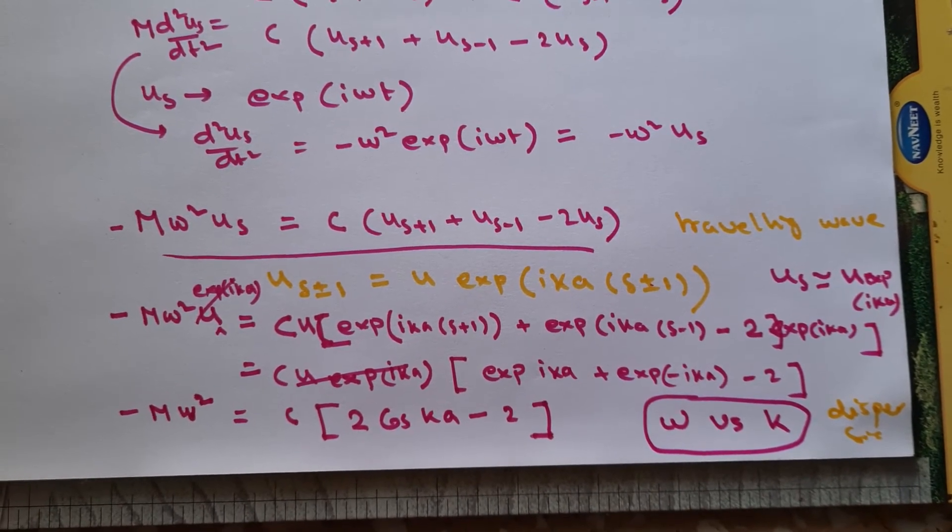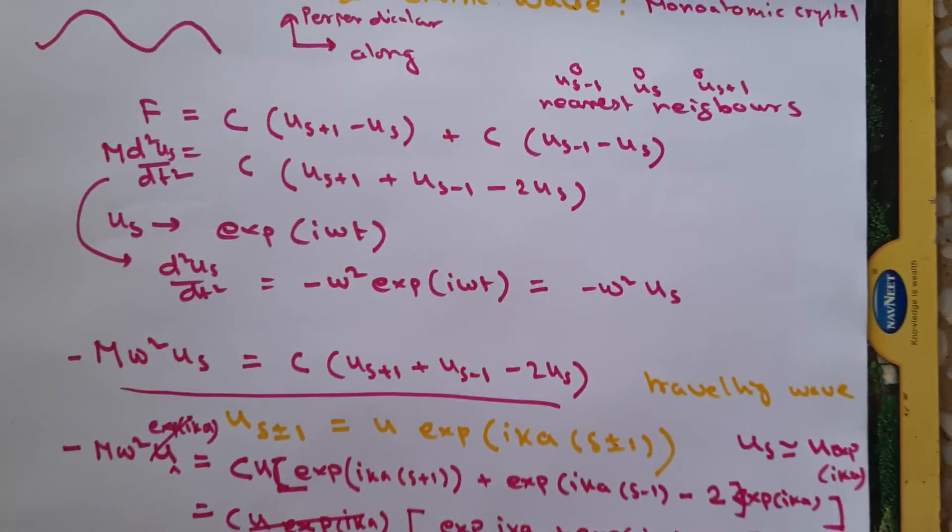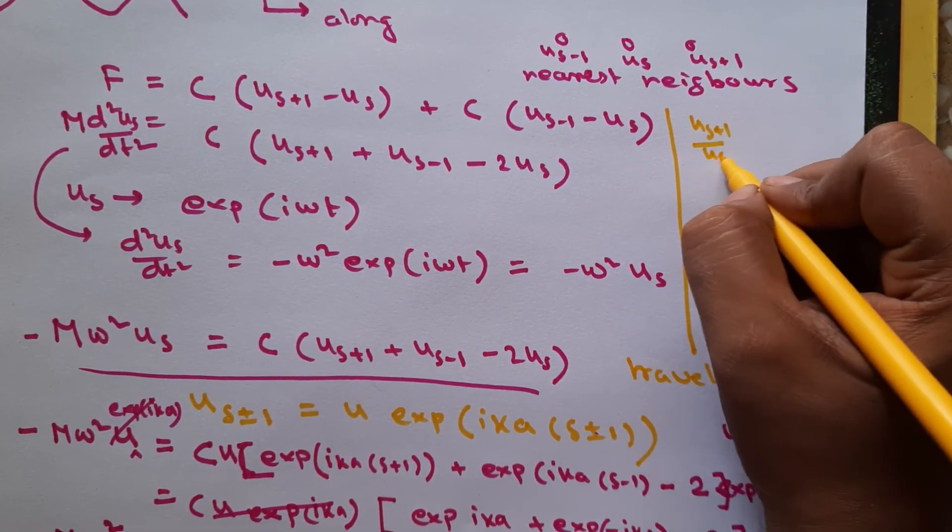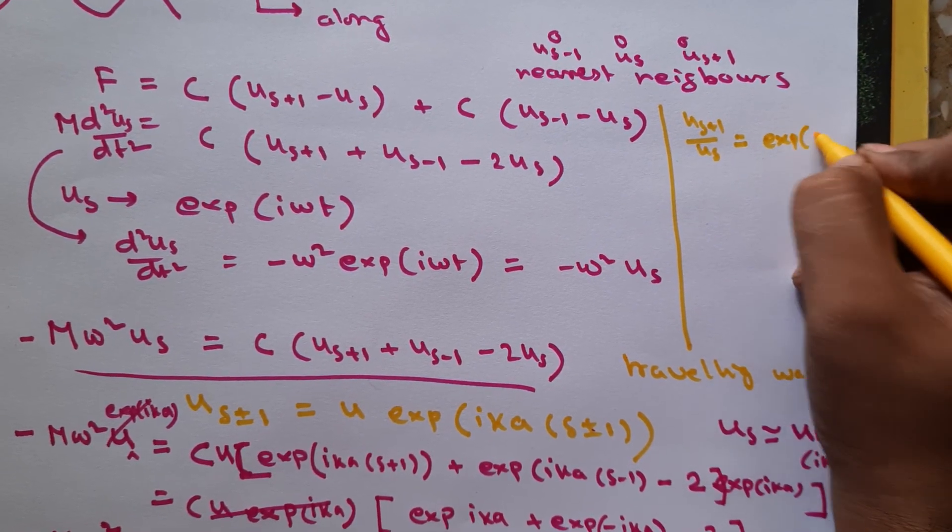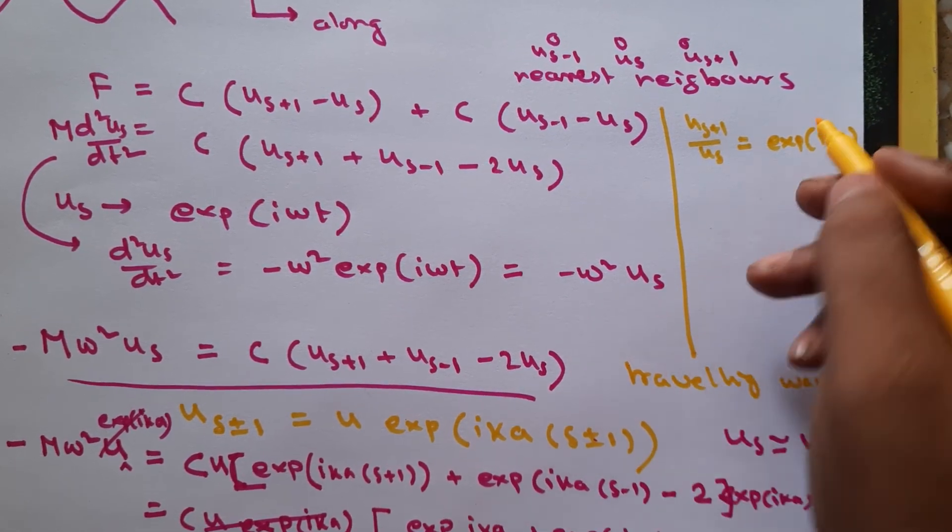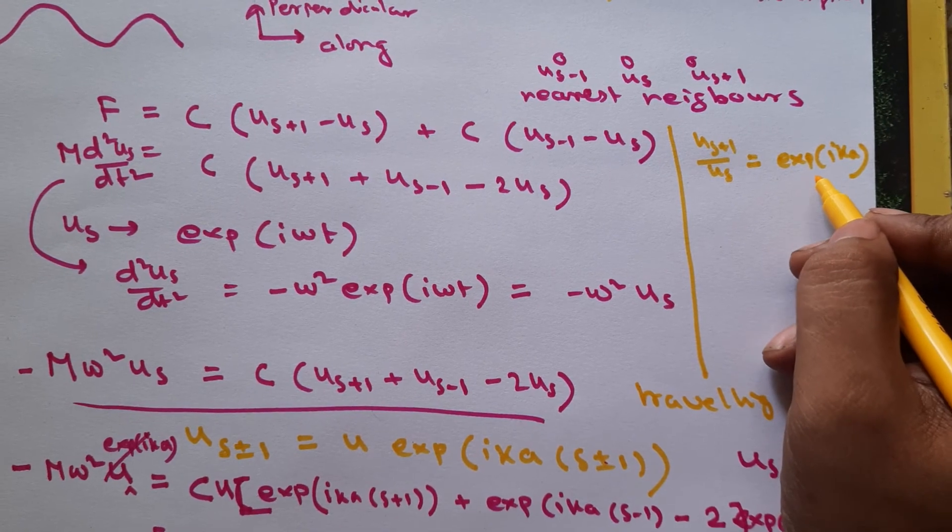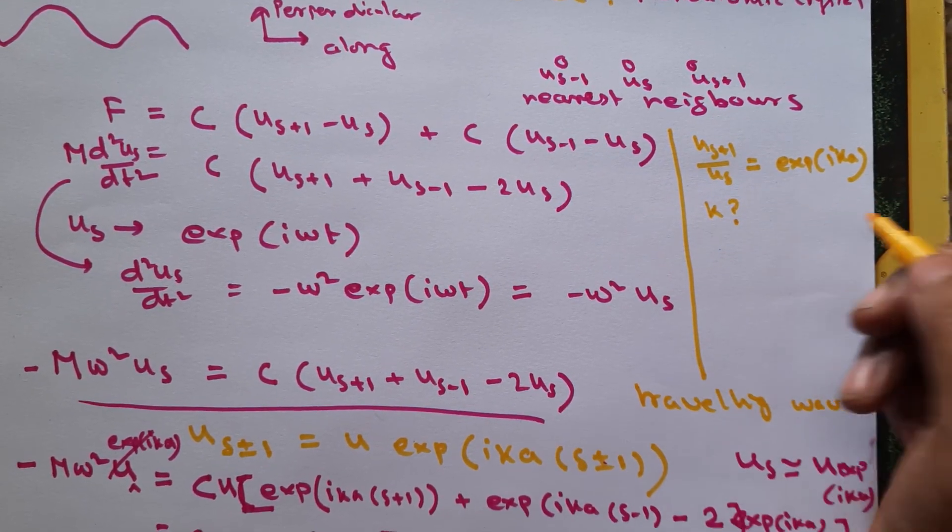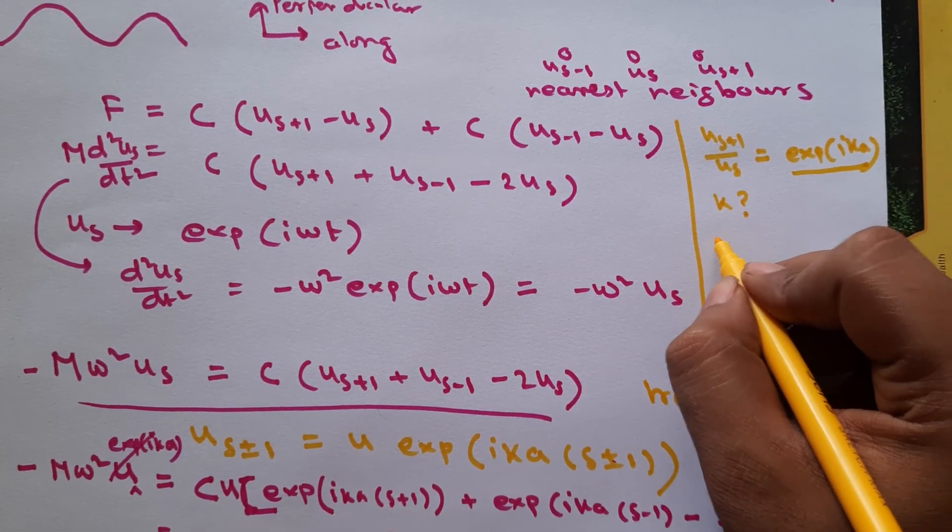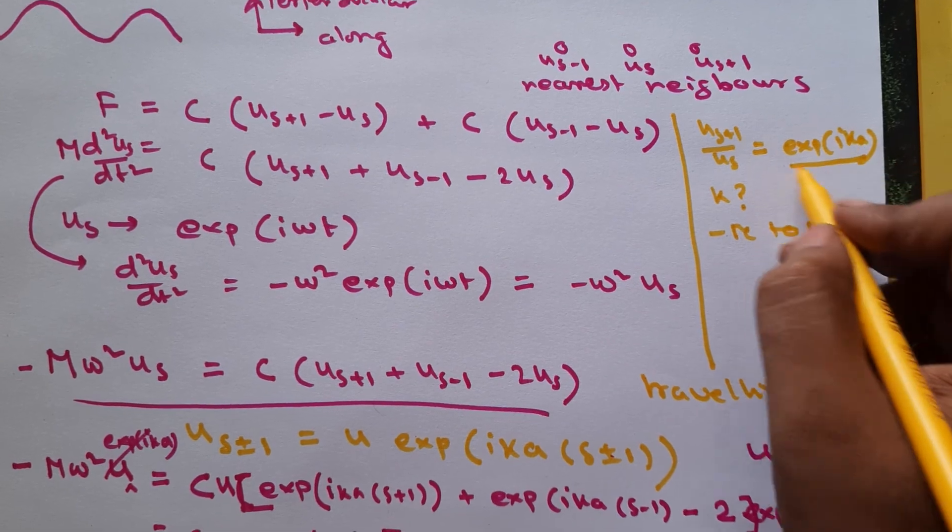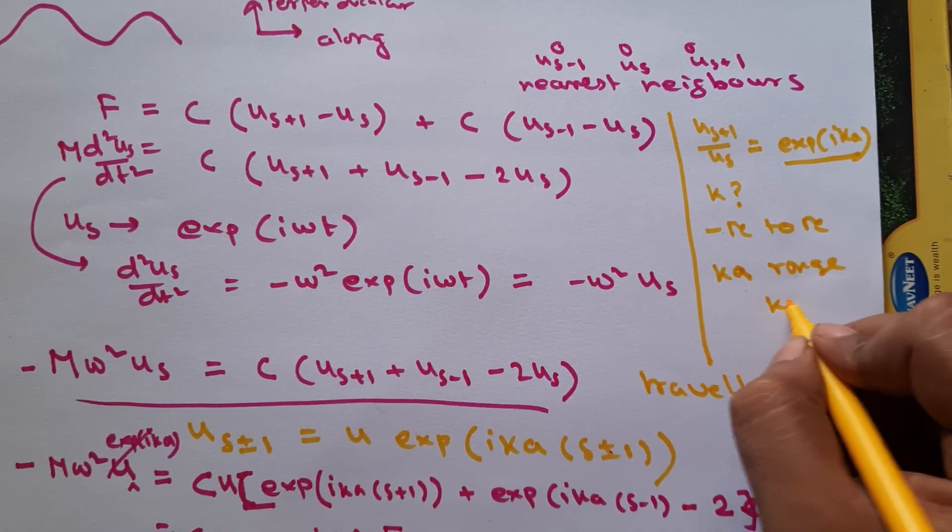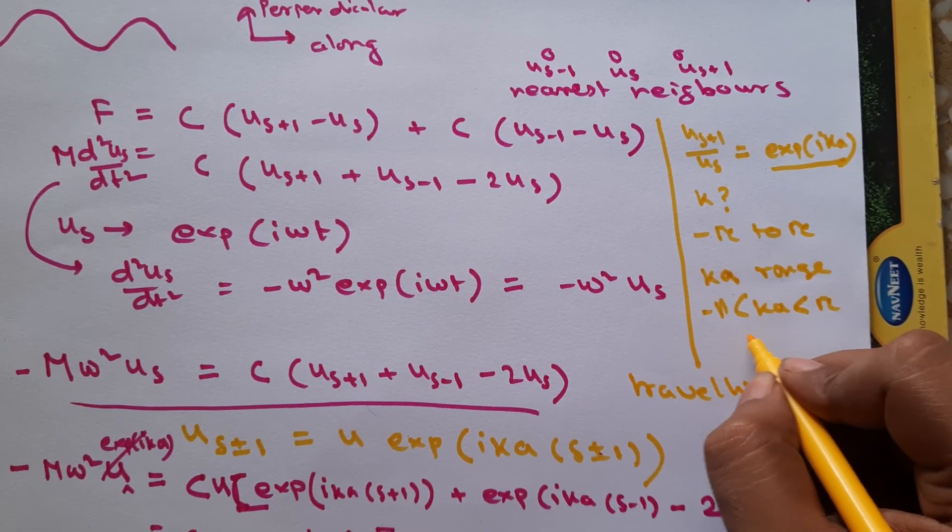Now also here one more important thing that I want to talk about is, if you take u_{s+1}/u_s, this ratio, then you will get exponential(ika) because exponential(ikas) will be cancelled from both upper and lower side. Now only which k values are important? So only this exponential(ika) will have distinct values only between -π to π.